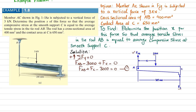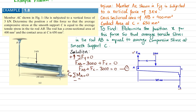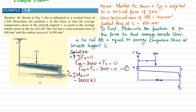Now we apply a second equation of equilibrium: the sum of all moments about point A equals zero, taking counterclockwise as positive. The 3000 N force produces a clockwise moment with perpendicular distance X, so it is negative. The force FC produces a counterclockwise moment with perpendicular distance 200 mm, so it is positive. Equation number 2: −3000·X + FC·200 mm = 0.